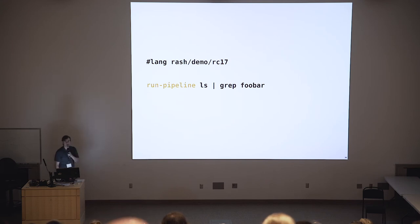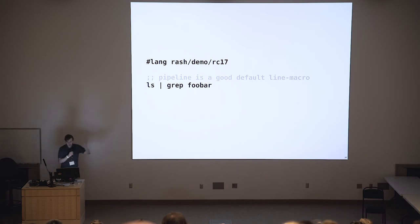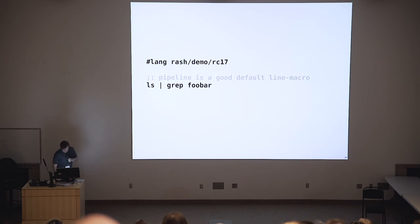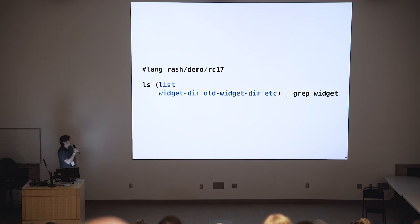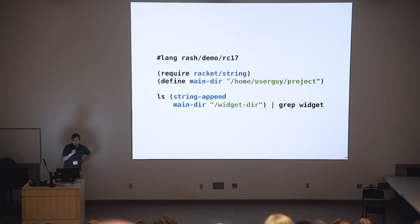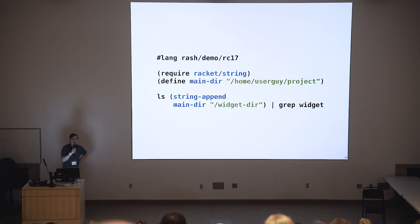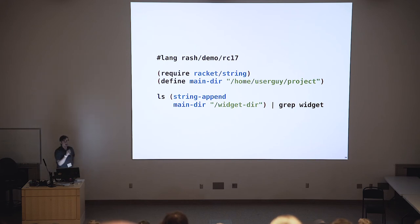Where we're going is that run-pipeline is the line macro we want most of the time. As the default, we can just leave it off — write ls, pipe, grep, whatever. The pipe character is a normal character in this hash-lang rash. We don't always want to eschew the parentheses though — sometimes we want to use them. Anytime you put parentheses in the middle of a pipeline, it's an escape to full-on normal Racket. Here we can compute the arguments to ls using Racket code.